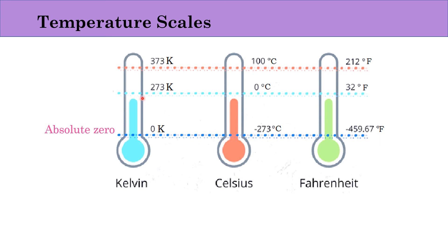Next is 273 Kelvin, which represents the freezing point of water — the point where water starts to freeze or form ice. In degree Celsius this is 0 degree Celsius, and in Fahrenheit it is 32 degree Fahrenheit.